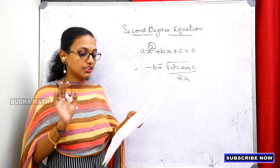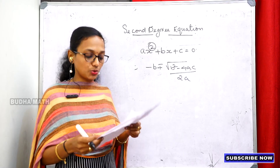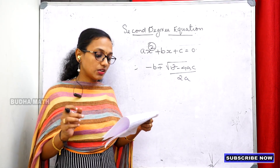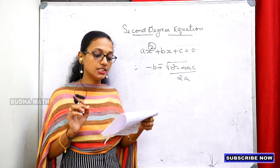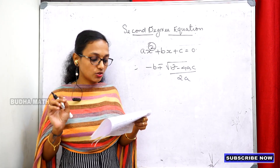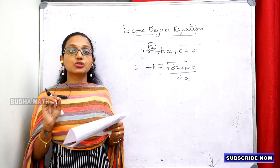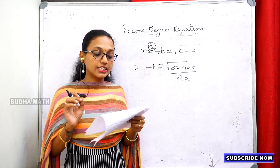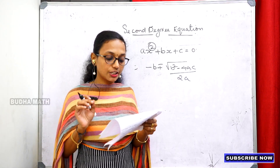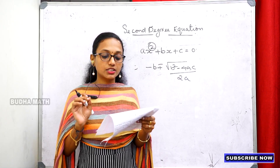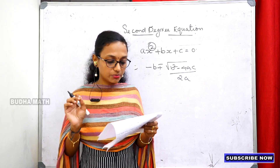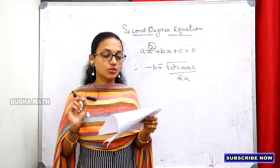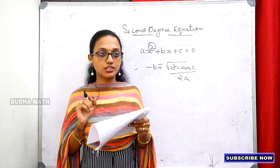Let's look at the first question. When each side of a square was reduced by 2 meters, the area becomes 49 square meters. What is the length of a side of the original square?